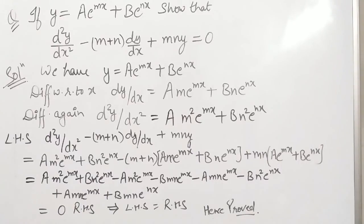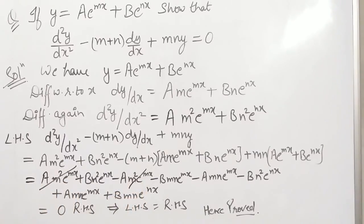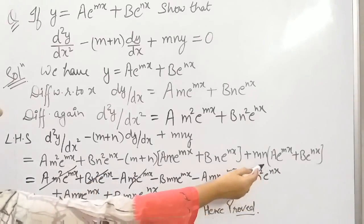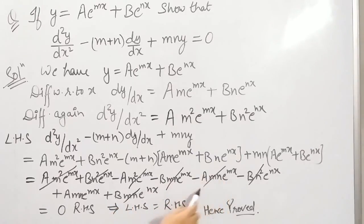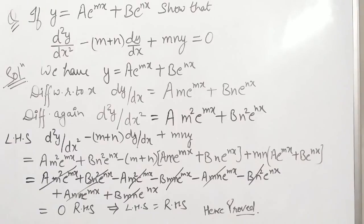All the terms cancel out: am²e^(mx) cancels with am²e^(mx), and similarly the remaining terms cancel pairwise, giving us zero — which is our right hand side. Therefore, left hand side equals right hand side, and this is proved.